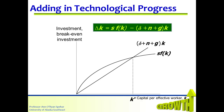In the steady state, investment S times f of k exactly offsets the reductions in little k attributable to depreciation, population growth, and technological progress. With this graph, we can do the same policy experiments as we did when we considered population growth — we can examine the effects of a change in the savings or population growth rates, and the analysis would be much the same. The main difference is that in the steady state, income per worker per capita is growing at rate g instead of being constant.